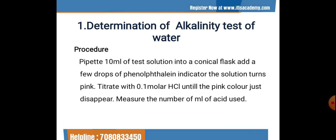The first method for detecting water quality is the alkalinity test. We pipette 10 ml of test solution into a conical flask and add a few drops of phenolphthalein indicator — the solution turns pink. We then titrate with 0.1 molar HCl until the pink color just disappears. We measure and note down the number of ml of acid used for further calculation of concentration.